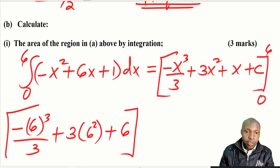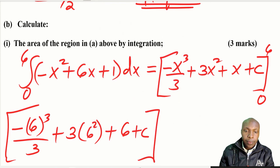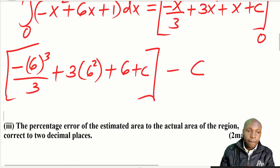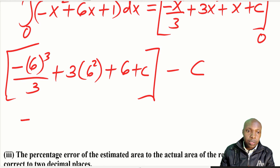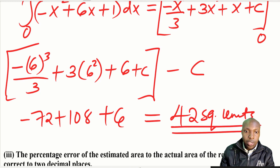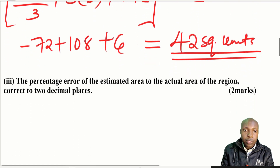Substituting x = 6 gives -72 + 108 + 6 + c, then subtracting the result at x = 0, which is just c. The constants c cancel out, leaving -72 + 108 + 6 = 42 square units. So the actual area by integration is 42 square units.